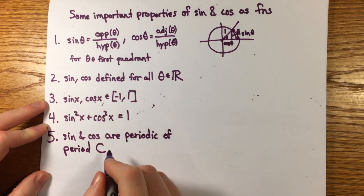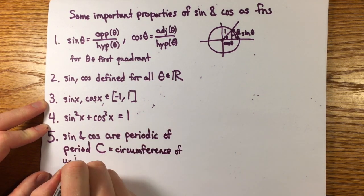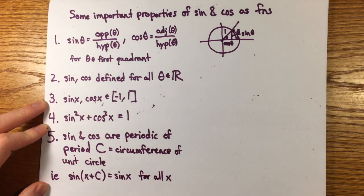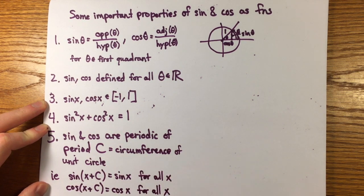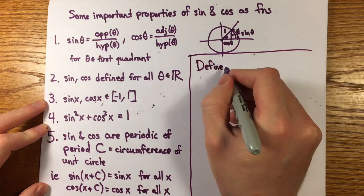The value is the same if we add any multiple of c to the argument, having wound that many times around the circle to the same point. We define the number pi so that c equals 2 pi.